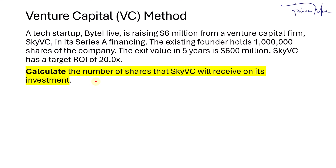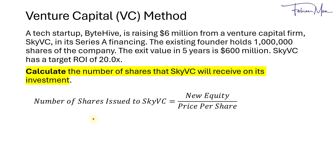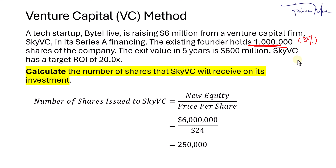Finally, calculate the number of shares that SkyVC will receive on its investment of $6 million. The price per share is $24, and SkyVC invested $6 million, so $6 million divided by $24 per share equals 250,000 shares. SkyVC would be issued 250,000 shares, while the founder retains 1 million shares. The founder would be diluted — previously holding 100% — but with 1 million shares out of 1.25 million total post-money shares, the founder would own 80%, and SkyVC would own 20%.